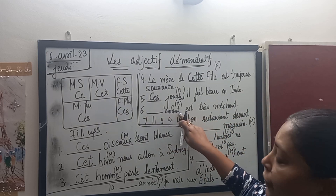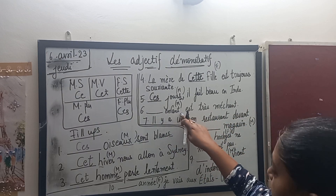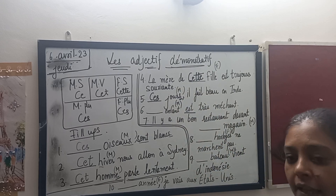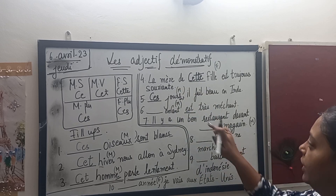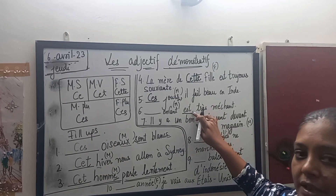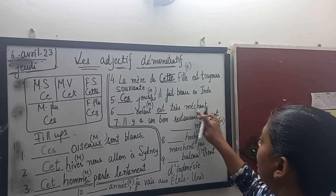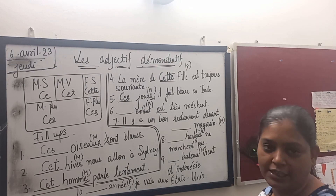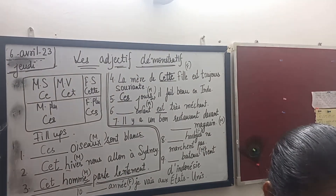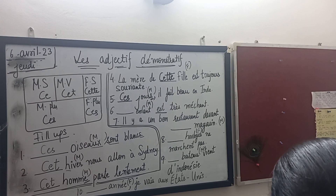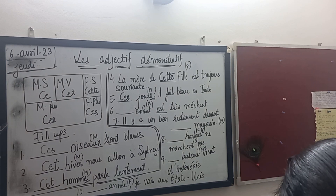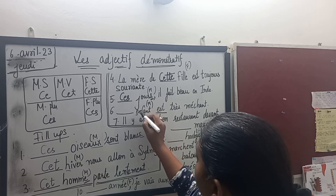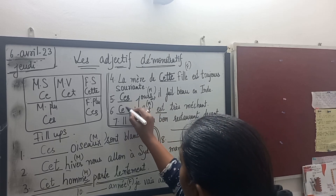Sixth sentence: homme — it is not ending with E, it is masculine singular. The verb used is 'est' (il est), which is singular. The word is 'mignon', meaning cute. It starts with a vowel, so we will go for C-E-T.